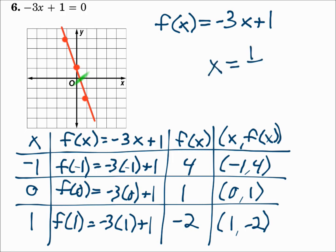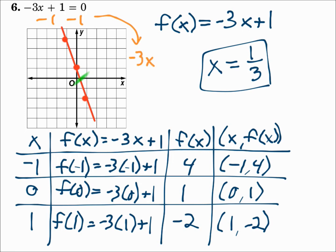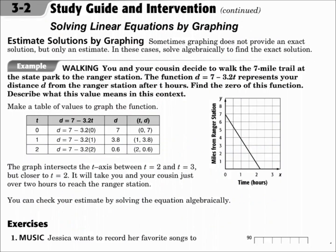That x-intercept has a value of 1 third. I know that's 1 third because I solved the original equation to verify. Looking at negative 3x plus 1 equals 0: subtract 1 from each side giving negative 3x equals negative 1, then divide both sides by negative 3. The negative 3s cancel on the left leaving x, and negative 1 divided by negative 3 is positive 1 third. So if the intercept falls between two numbers, solve algebraically to get the exact value. Sometimes graphing only provides an estimate — in those cases, solve algebraically for the exact solution.